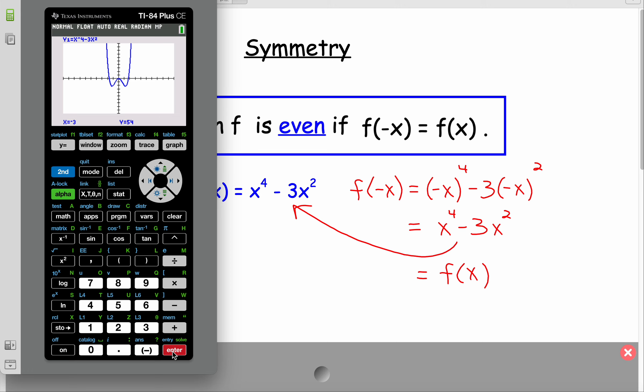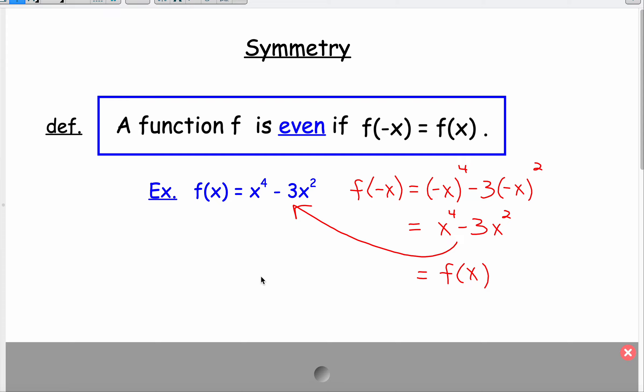So what you can see is happening here is that this graph is symmetric about the y-axis. If I folded this graph on the y-axis, the graph would go right on top of itself. So that's what an even function is.